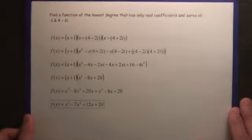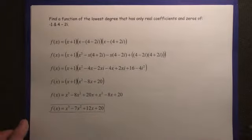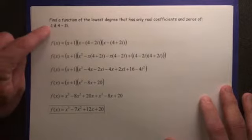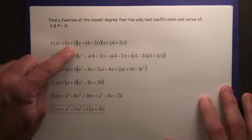So therefore, find a function of the lowest degree that has only real coefficients and zeros of negative 1 and 4 minus 2i. Well, if negative 1 is a zero, we know that x plus 1 is a factor.